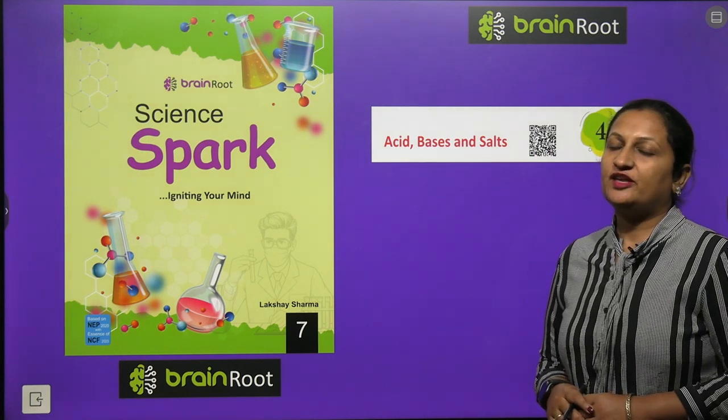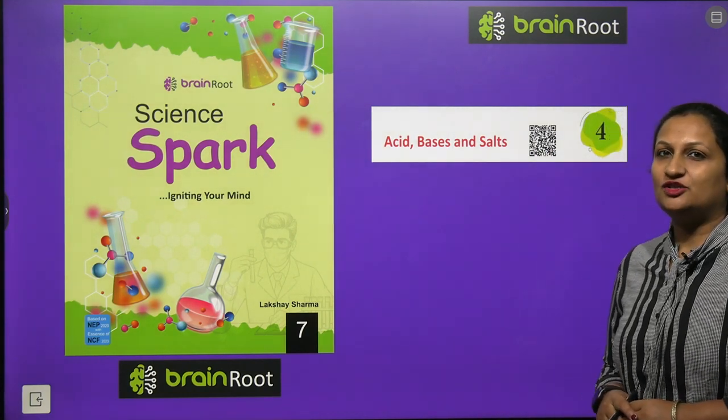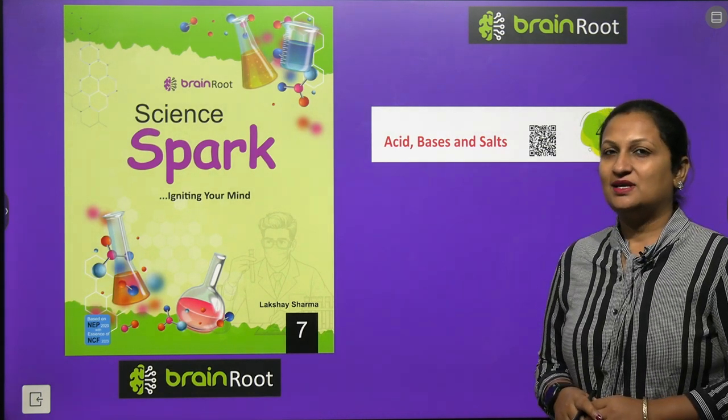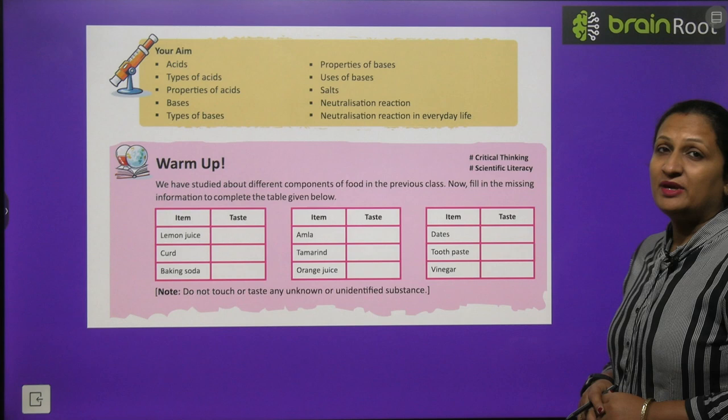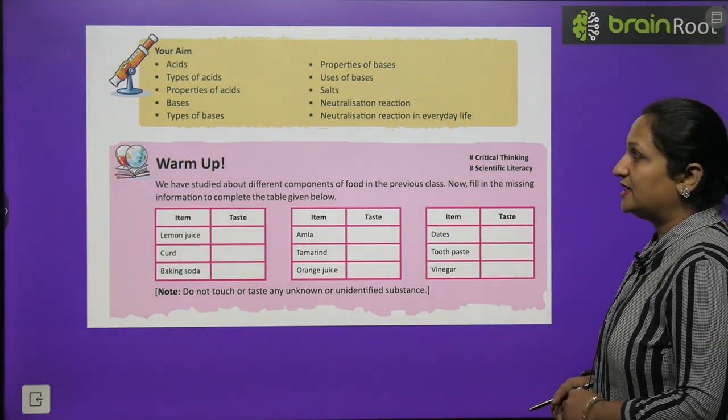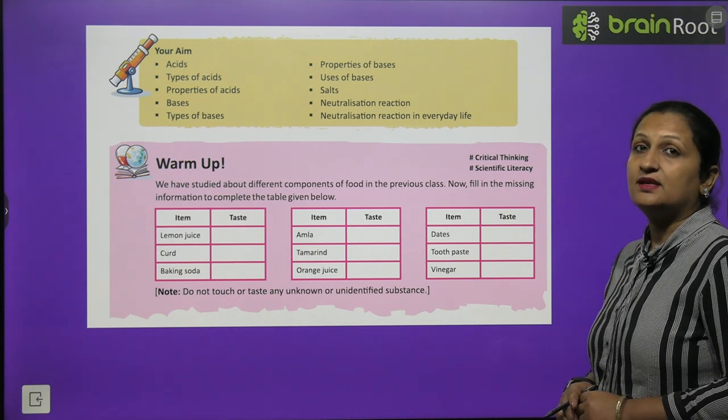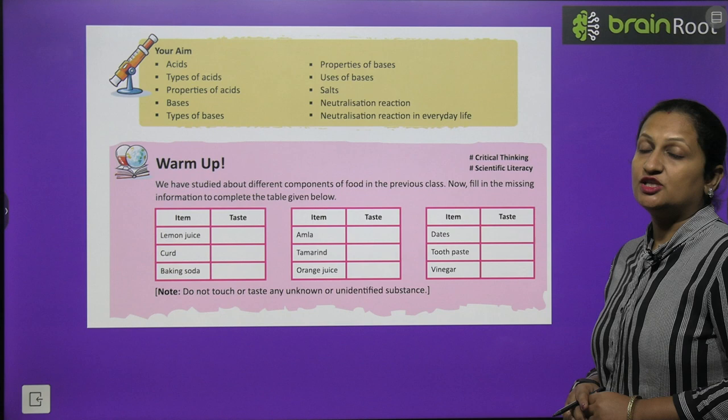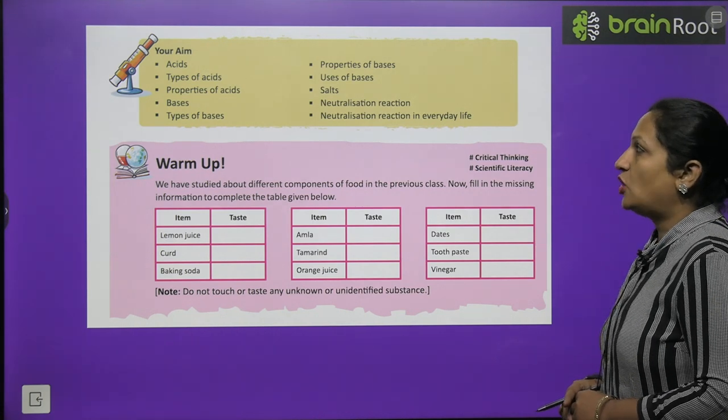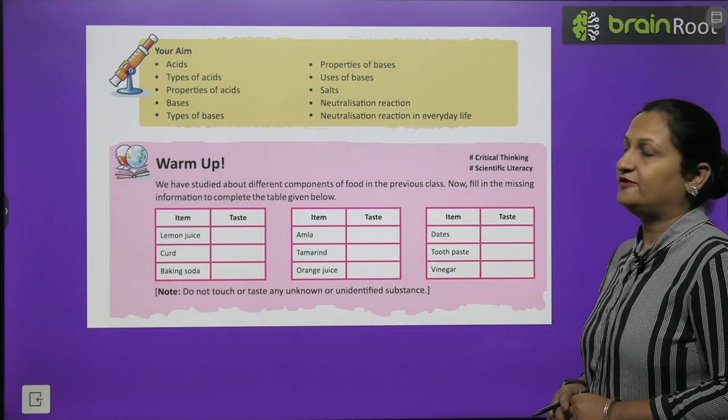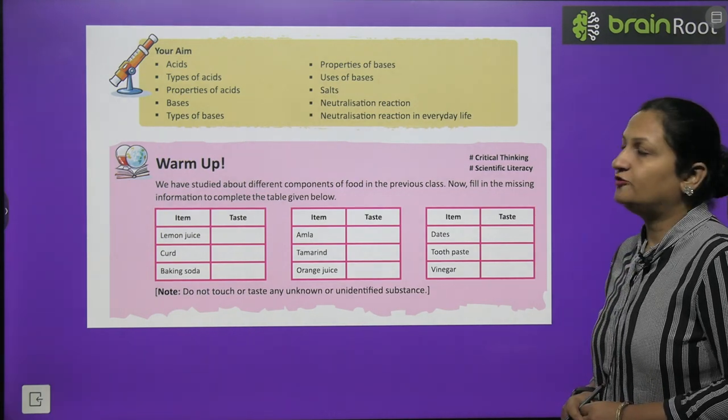Hello my dear children. Today we are going to start with Class 7, Chapter Number 4: Acids, Bases and Salts. The main aim of this chapter will be to learn about acids, types of acids, properties of acids, bases, types of bases, properties of bases, uses of bases, salts, neutralization reaction, and neutralization reaction in everyday life.